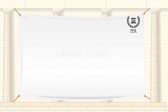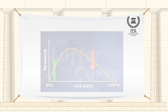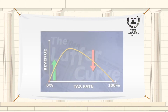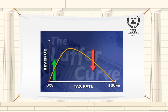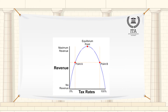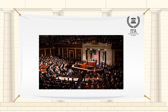The Laffer Curve is a curved graph that illustrates the theory that, if tax rates rise beyond a certain level, they discourage economic growth, thereby reducing government revenues. The Laffer Curve is a graphical representation of the relationship between tax rates, tax revenue, and taxable income.